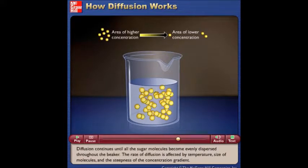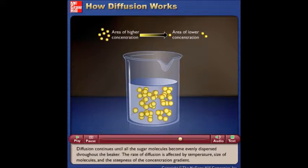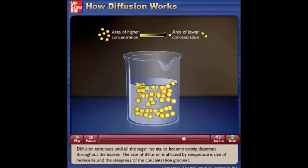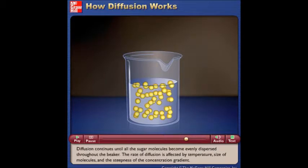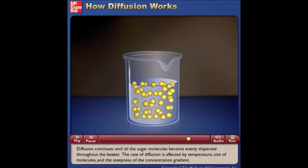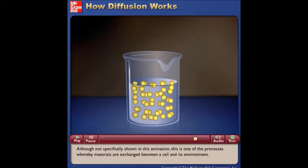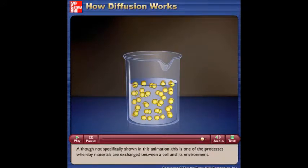Diffusion continues until all the sugar molecules become evenly dispersed throughout the beaker. The rate of diffusion is affected by temperature, size of molecules, and the steepness of the concentration gradient. Although not specifically shown in this animation, this is one of the processes whereby materials are exchanged between a cell and its environment.